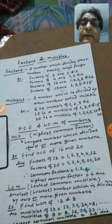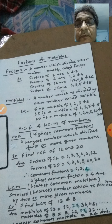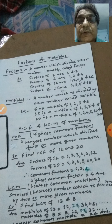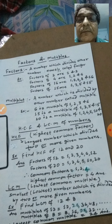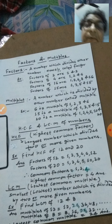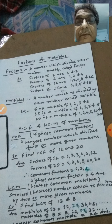Now let us see what factors of 4 can be. We check: 1 divides 4, 2 divides 4, 4 divides 4. This means factors of 4 are 1, 2, and 4.